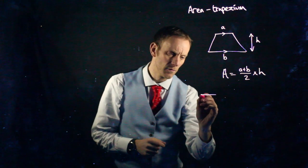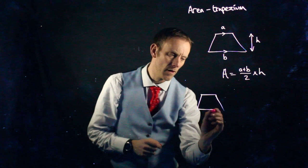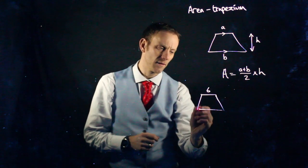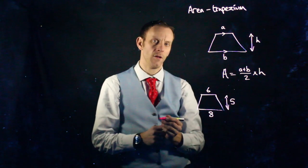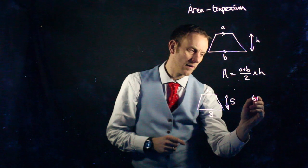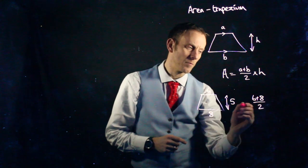Quick example. Here's one. If I gave you the top value as 6 and the bottom value as 8, and the height as 5, we add together 6 and 8, divide by 2.